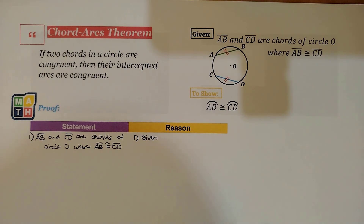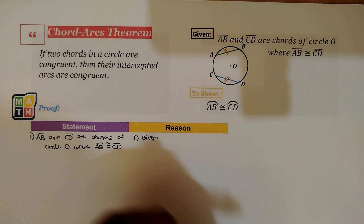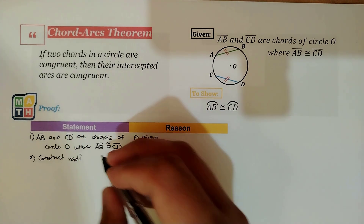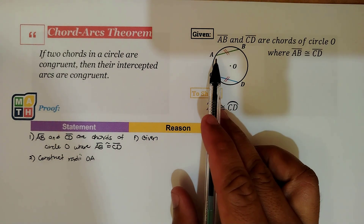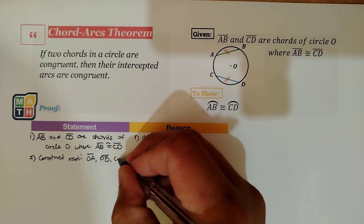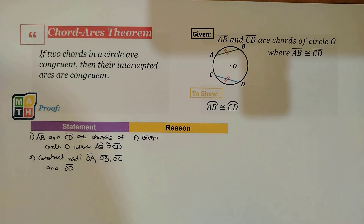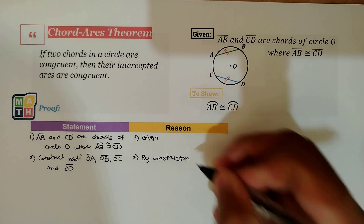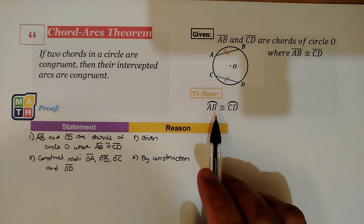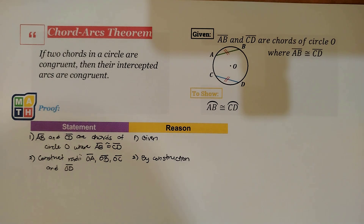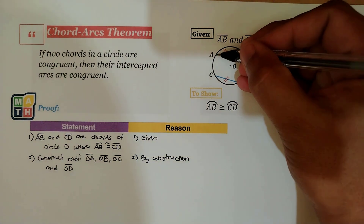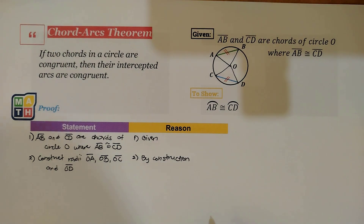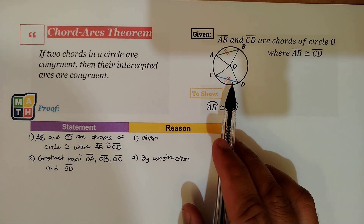The next part of this proof is construction. We construct, from O — the center of circle O — segments OA, OB, OC, and OD. This is by construction. We need to construct these even though we're just showing the relationship on the arcs, because we'll be using the concept from the previous video on the Chord-Central Angles Theorem. Once we construct this, we have the same illustration as the previous video, using triangles to examine the relationship of the intercepted arcs.